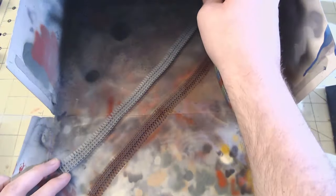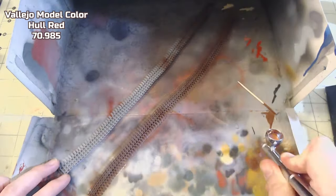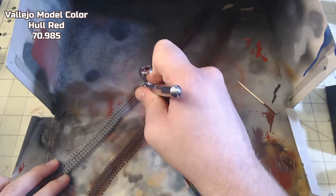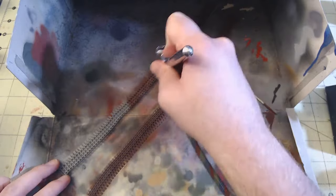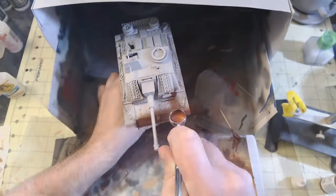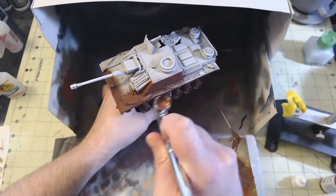With assembly done, we can begin painting. To start, everything from the tracks to the armor itself received a coat of Vallejo Model Color Hull Red 70.985. It's a little darker than the red oxide primer the tank would have received from the factory, but that's okay. After all, this is going to get covered in rust and soot, so the darker tone will blend nicer with those two effects than the red oxide primer would.